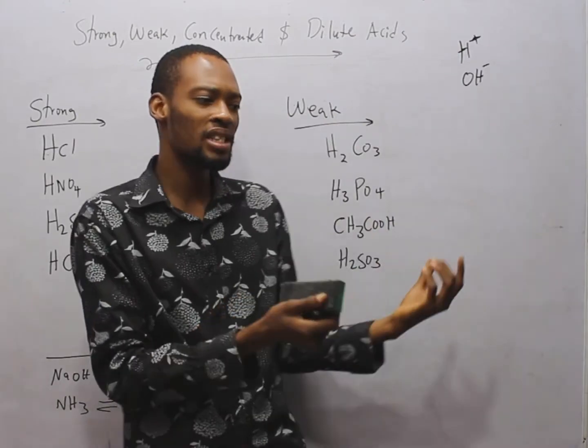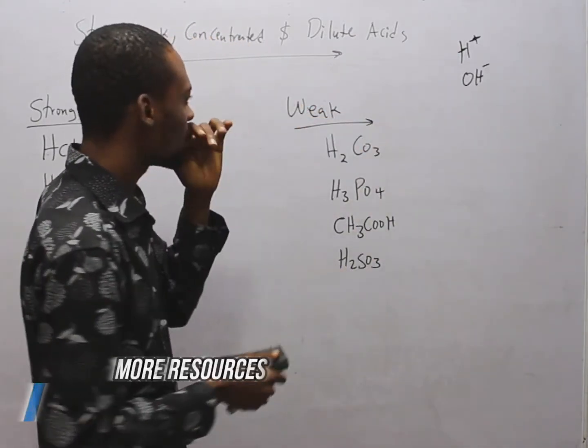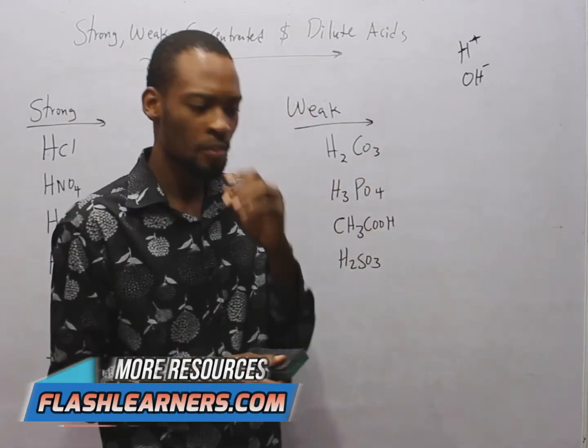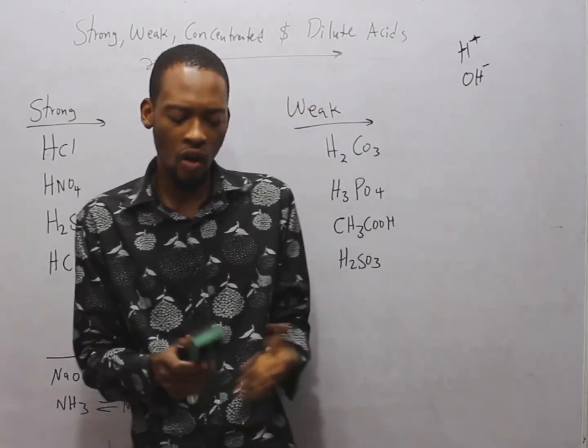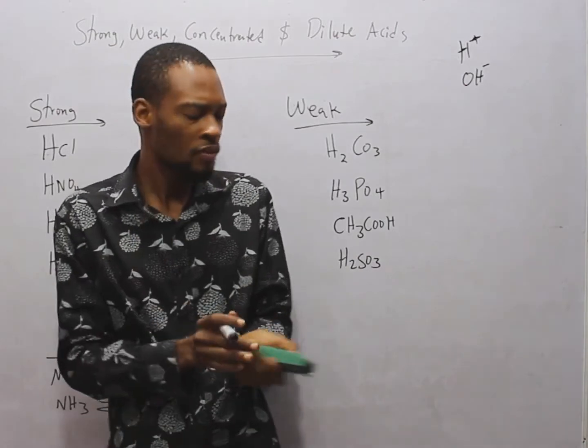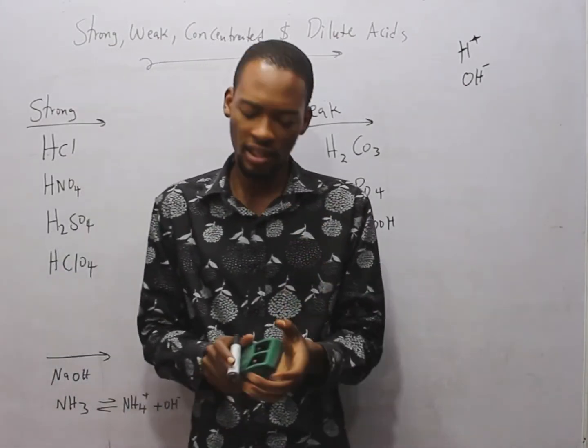In your study of acid, base, and even salt, you come across weak acid, strong acid, concentrated acid, and dilute acid. You begin to wonder, what is the meaning of all these things? Or in some cases, you understand them partially. Today, I will explain them the way you will understand.